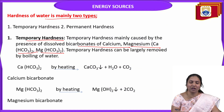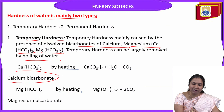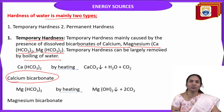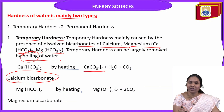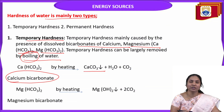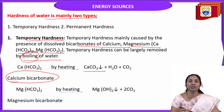Temporary hardness can be largely removed by boiling. For example, if calcium bicarbonate is present in water, during the boiling process the soluble calcium bicarbonate is converted into calcium carbonate precipitates. We observe white colour precipitates forming on the edges of the bowl when we heat water at home.